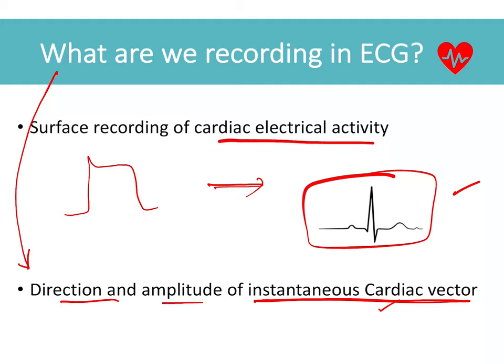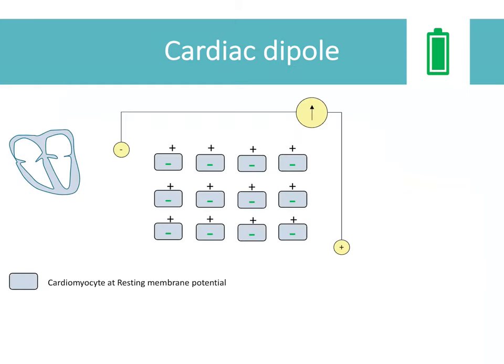The answer to our question — what are we actually recording — is: we are recording the direction and amplitude of the instantaneous cardiac vector. How does this cardiac vector come from, and what is its relation to the cardiac dipole? This is a schematic representation of the heart.